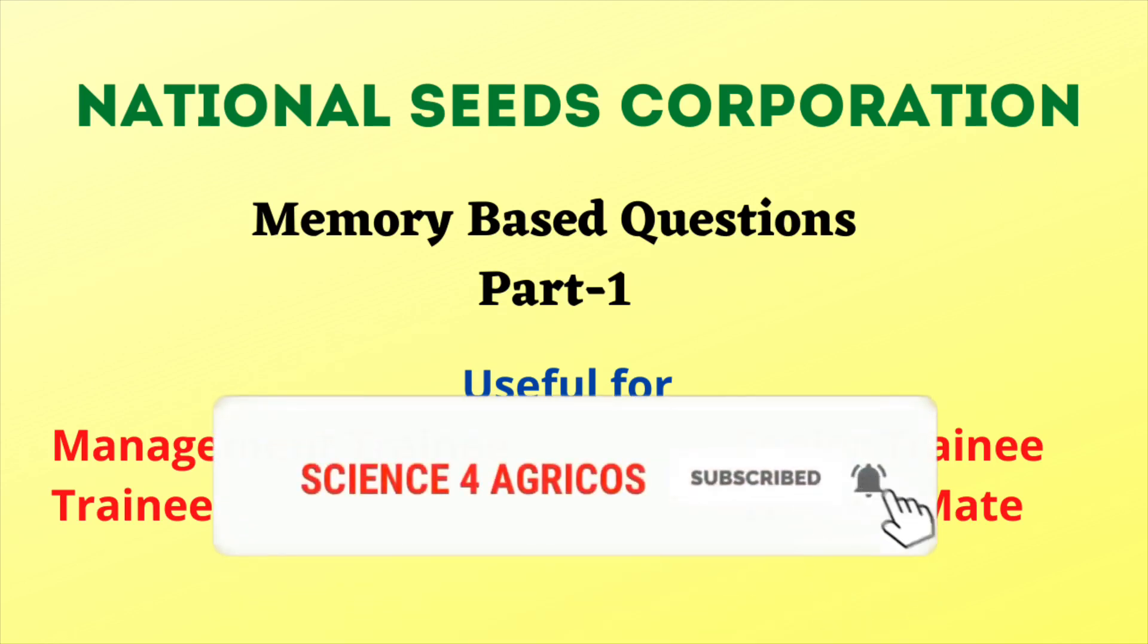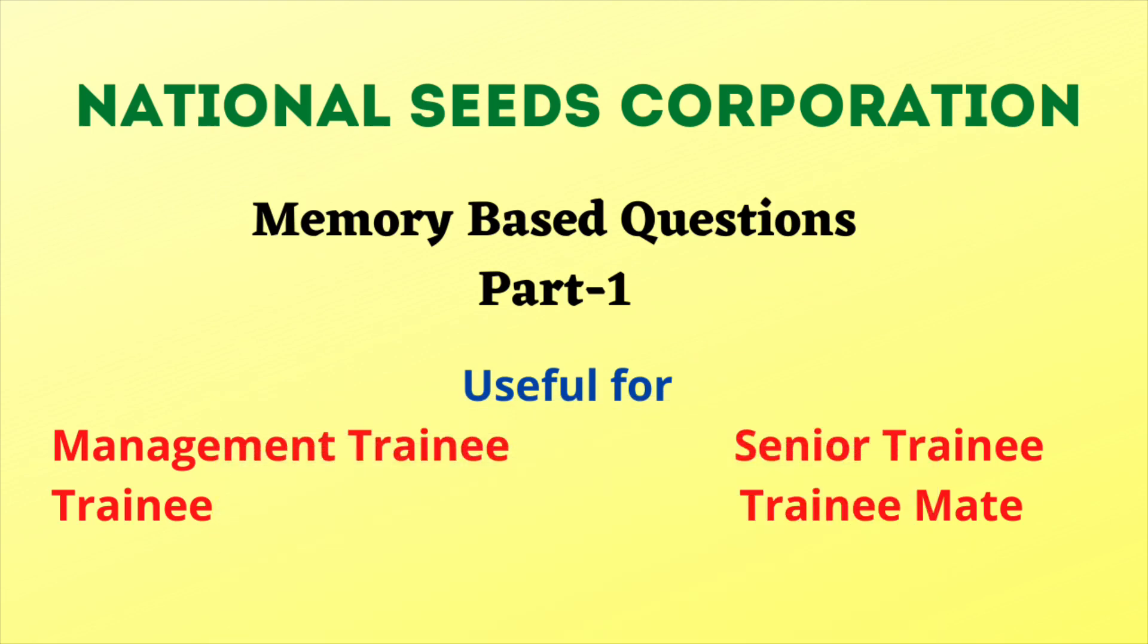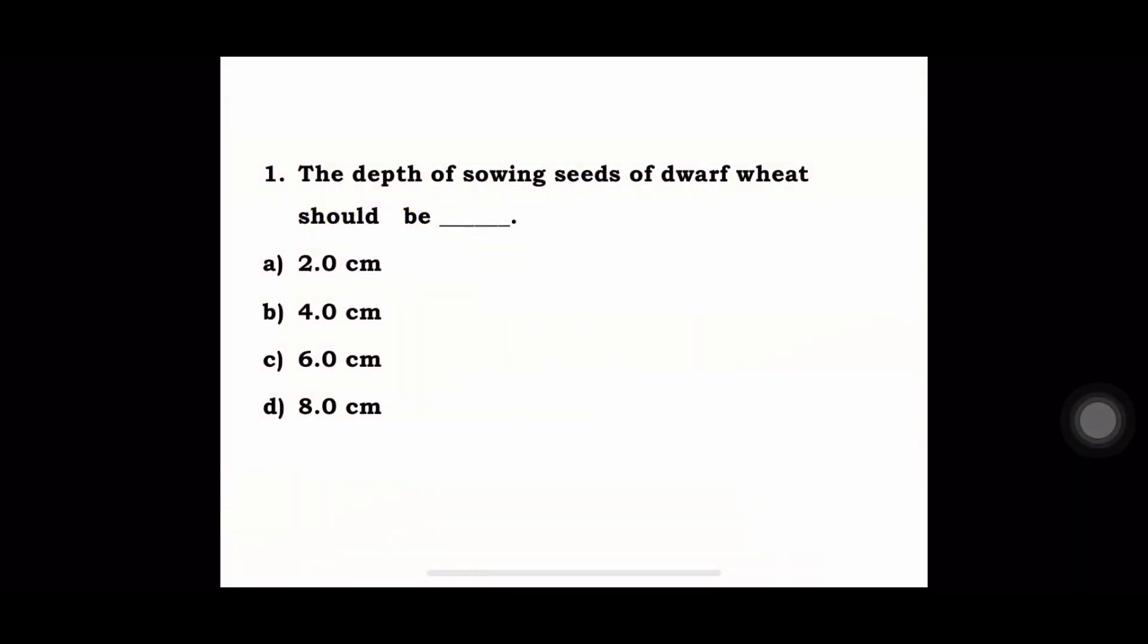The first question is: the depth of sowing seeds of dwarf wheat should be a) 2 cm, b) 4 cm, c) 6 cm, or d) 8 cm. The answer is 4 cm.